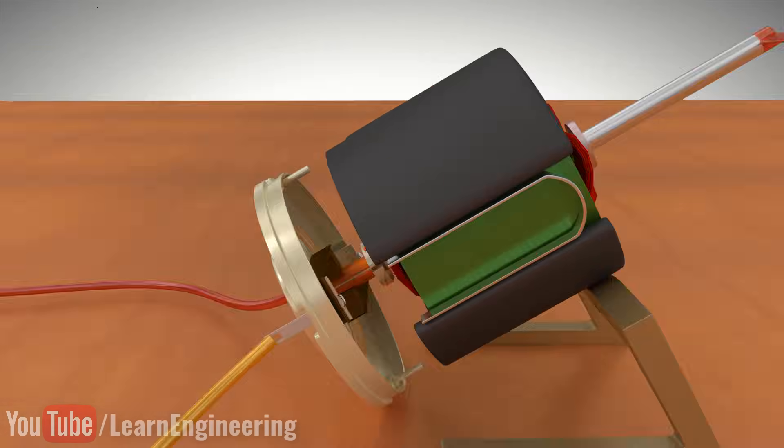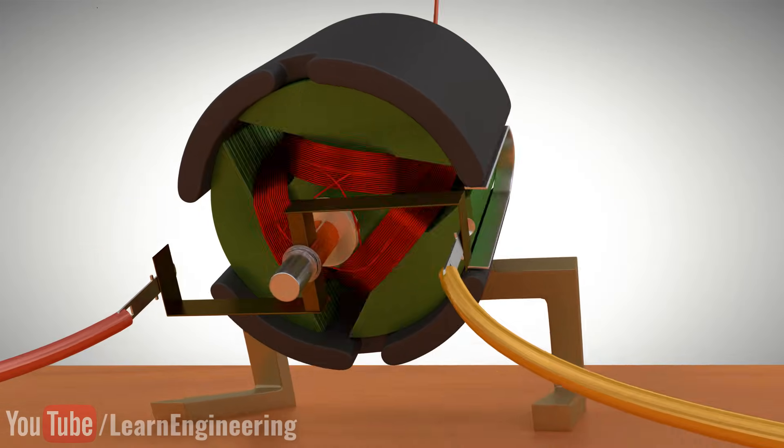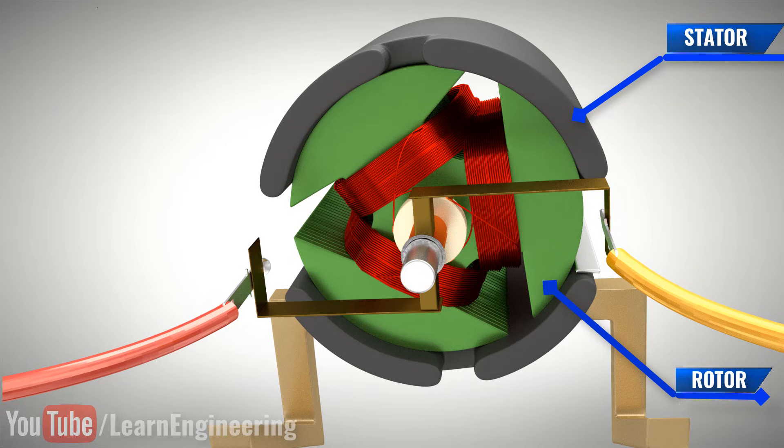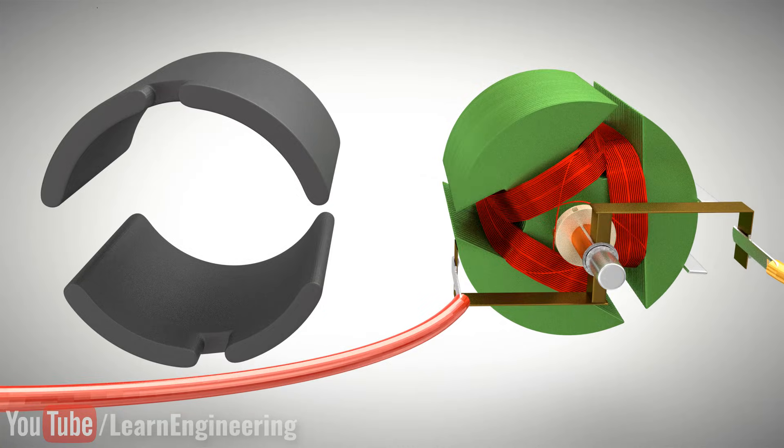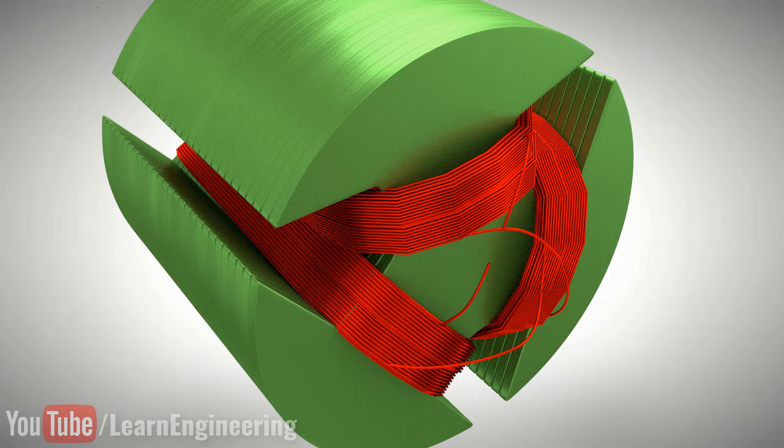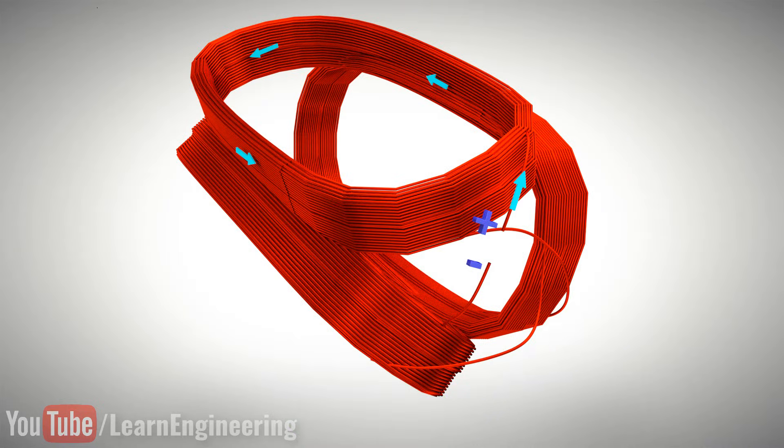You can see that the two permanent magnets constitute the stator, while the rotor is a 3-pole type. A single coil is used for the complete winding of the rotor. You can understand the winding details by following the current flow.